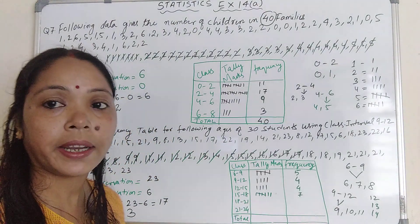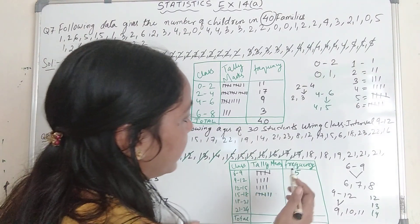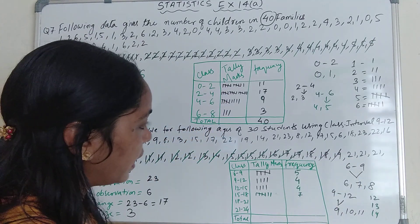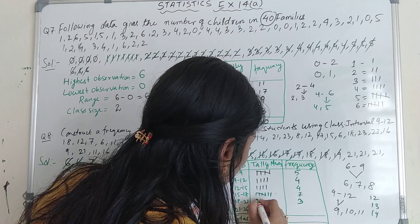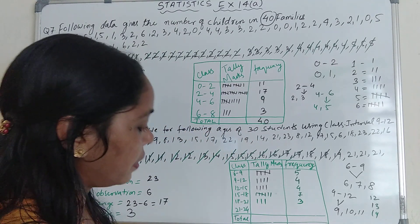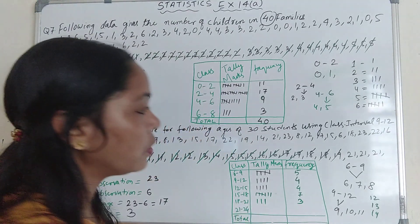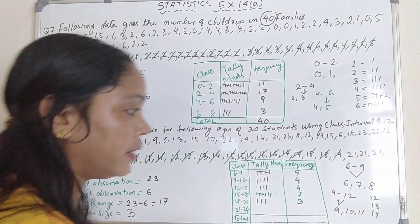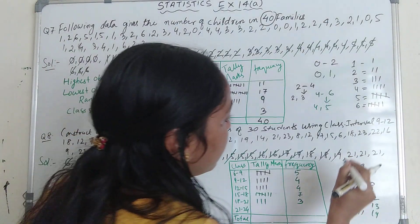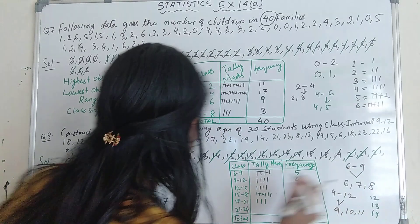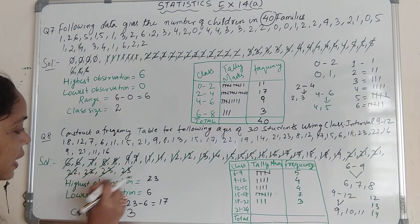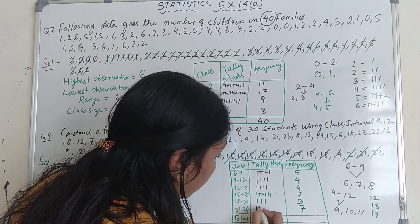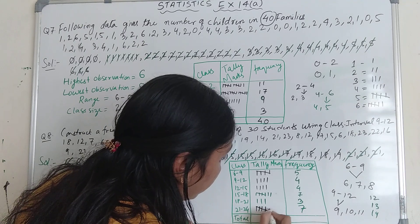For interval 18 to 21 — include 18, 19, and 20. Counting gives: 1, 2, 3, 4, 5, 6, 7 — so the frequency is 7. For interval 21 to 24 — include 21, 22, and 23. Counting gives: 1, 2, 3, 4, 5, 6, 7 — so the frequency is 7. Write tally marks for 7.